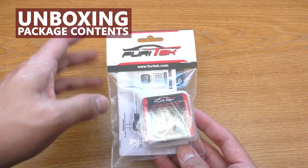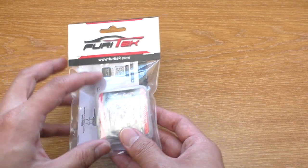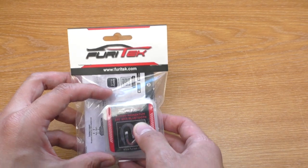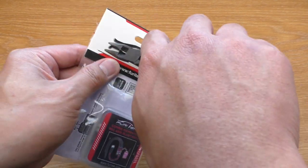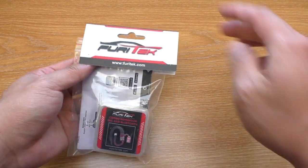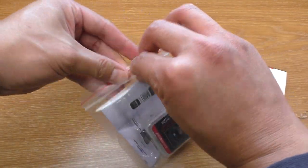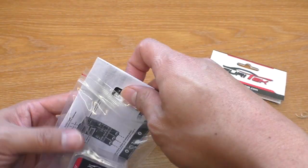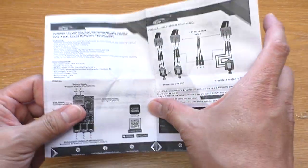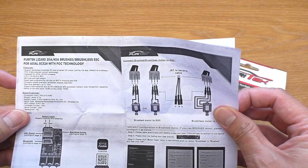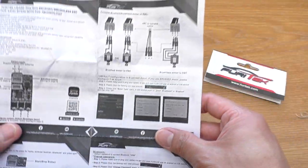Here's the package. This is the final version that you're going to get when you buy it - the combo ESC and Bluetooth module. Let's open it up and see what's inside. It comes in a ziplock pack. We have the manual, let's see how well written it is. It comes with everything you need to know. It's only one page.